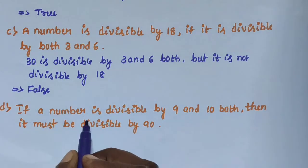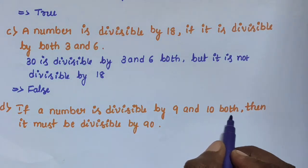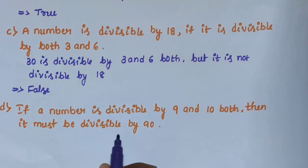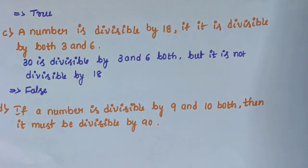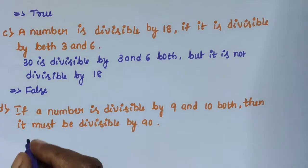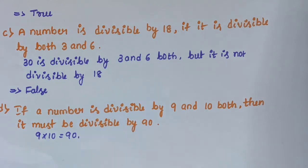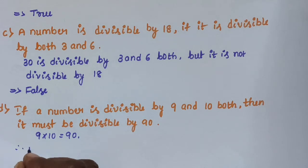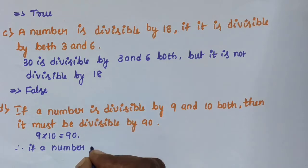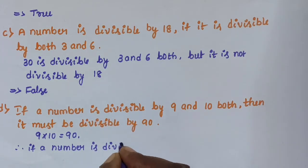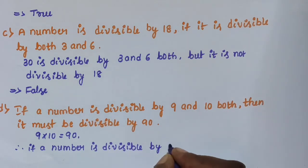Sub-question D: if a number is divisible by both 9 and 10, then it must be divisible by 90. This statement is true, because 9 × 10 = 90, and any number divisible by both 9 and 10 must also be divisible by 90.